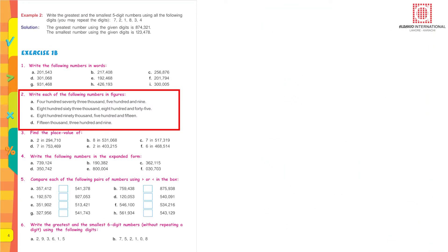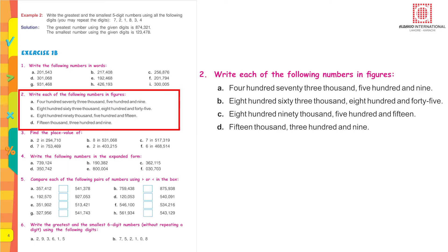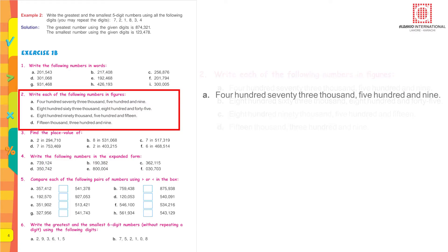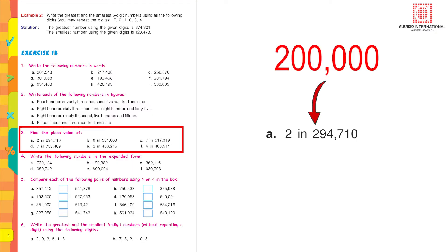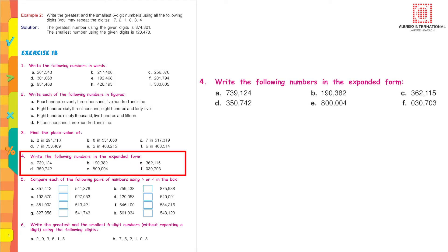Write each of the following numbers in figures. Now in question number 1 you did it in words, numbers were given and you did it in words. Now you have to write these numbers which are given in words, you have to write it in form of numbers. 473,000 that means 473,509. Again find the place value of 2 in 294710. In this part A value of 2 is 200,000. Write the following numbers in the expanded form. You have already done it. Now you try doing it yourself.